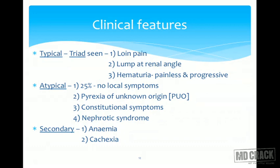Clinical features: a classical triad is observed in RCC. One is loin pain. Second is the presence of a lump or swelling at the renal angle. Third is painless and progressive hematuria. As the tumor slowly engulfs the renal parenchyma, hematuria will increase but it will be painless. One fourth of patients with RCC will have no local symptoms whatsoever — it will be an incidentaloma found on routine abdominal screening for some other cause.